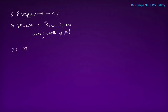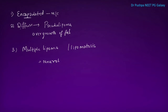The third variety is multiple lipoma, often called lipomatosis. Multiple lipoma means there are many lipomas over the body. Sometimes it is painful because it contains nerve tissue, in which case it is called neurolipomatosis. As the name suggests, there are multiple swellings.